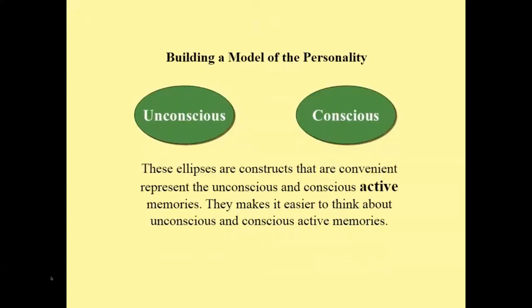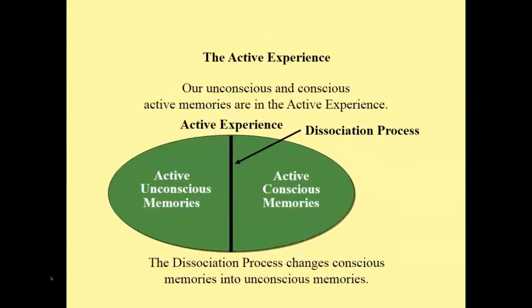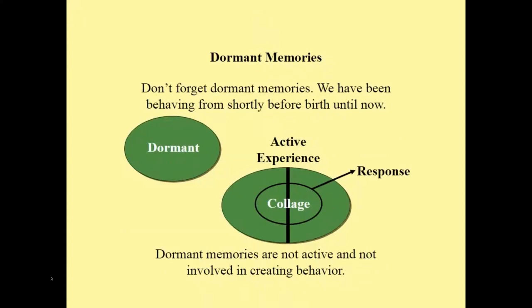Dissociation is a natural process that we use daily in our lives. We are starting to build a model of the personality. These ellipses are constructs that conveniently represent the unconscious and conscious active memories, making it easier to think about them. Here we are putting the active memories in the two ellipses together in one ellipse — I call this the active experience, as this construct represents all active memories. I put the dissociation process down the middle as a supposed barrier between active unconscious and conscious memories. Don't forget dormant memories — we have millions of unique memories that have recorded our experience and behavior. Dormant memories are not active and not involved in creating behavior.